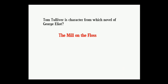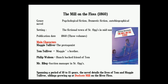About The Mill on the Floss: it belongs to the genres of psychological fiction, domestic fiction, and autobiographical novel. Setting: the fictional town of St. Ogg's in the Midlands. Publication date: 1860, in three volumes. Main characters: Maggie Tulliver, Tom Tulliver, Philip Wakem, Mr. Riley. The story spans a period of 10 to 15 years, detailing the lives of Tom and Maggie Tulliver, siblings growing up at Dorlcote Mill on the River Floss.